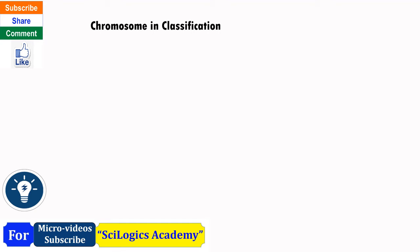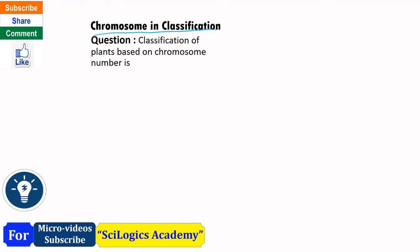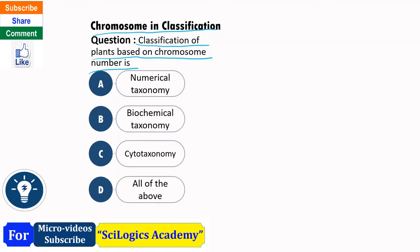Now we will see the importance of chromosome in classification. The question is: classification of plants based on chromosome number is known as — options are numerical taxonomy, biochemical taxonomy, cytotaxonomy, or all of the above.